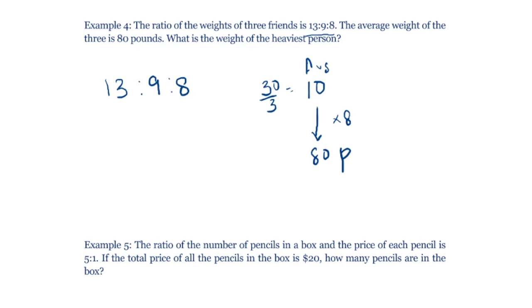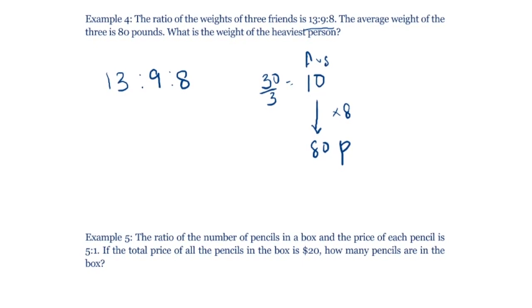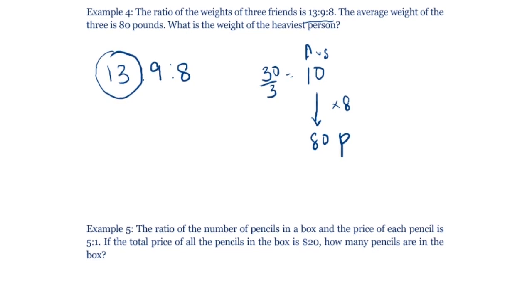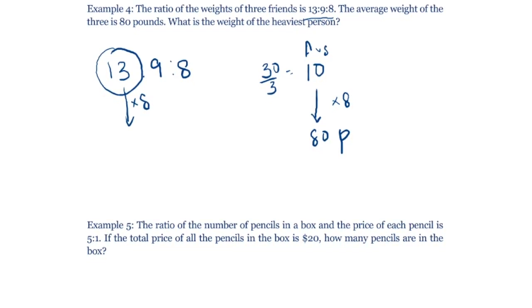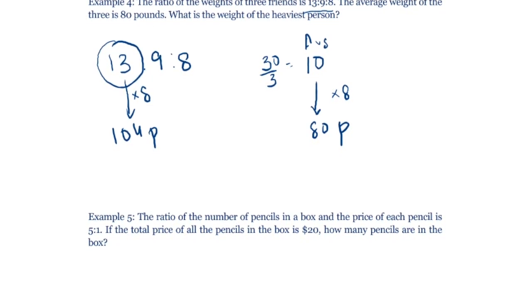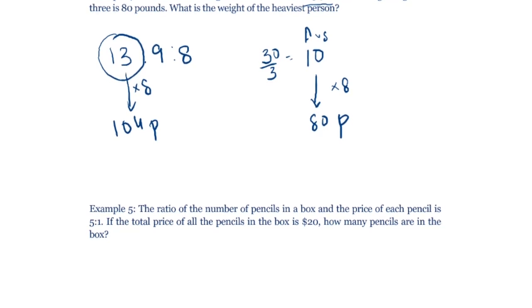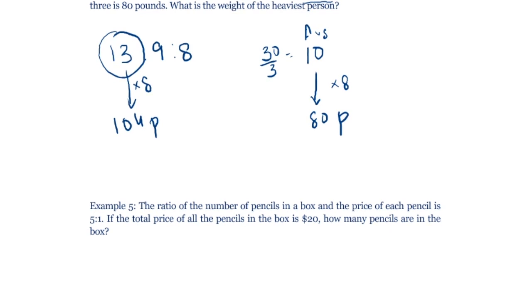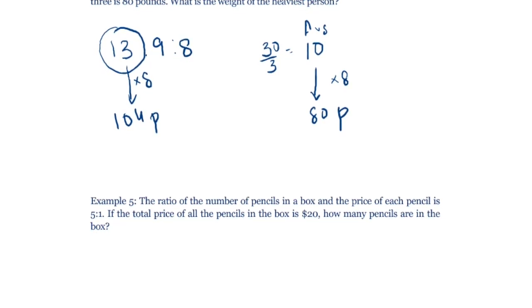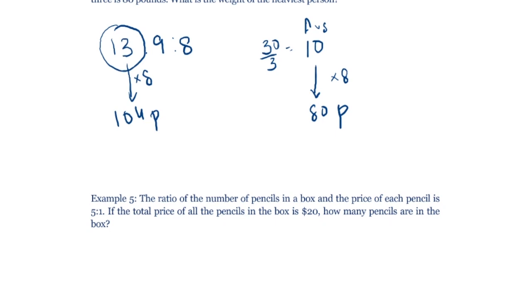The average in ratio terms is 10, and the actual average is 80 pounds, so the multiplier is 8. The heaviest person has ratio value 13, so their actual weight is 13 times 8 equals 104 pounds. Using algebra would give the same answer — 13x, 9x, 8x, average equals 80, x equals 8 — but visualizing it with the multiplier is much faster.